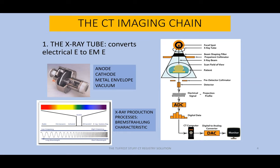As you know, electromagnetic energy is X-radiation. So the test answer here is: what's the function of the X-ray tube in the CT imaging chain? That function is the conversion of electrical energy to electromagnetic energy. The X-ray tube in CT, just like in diagnostic, has four major components.